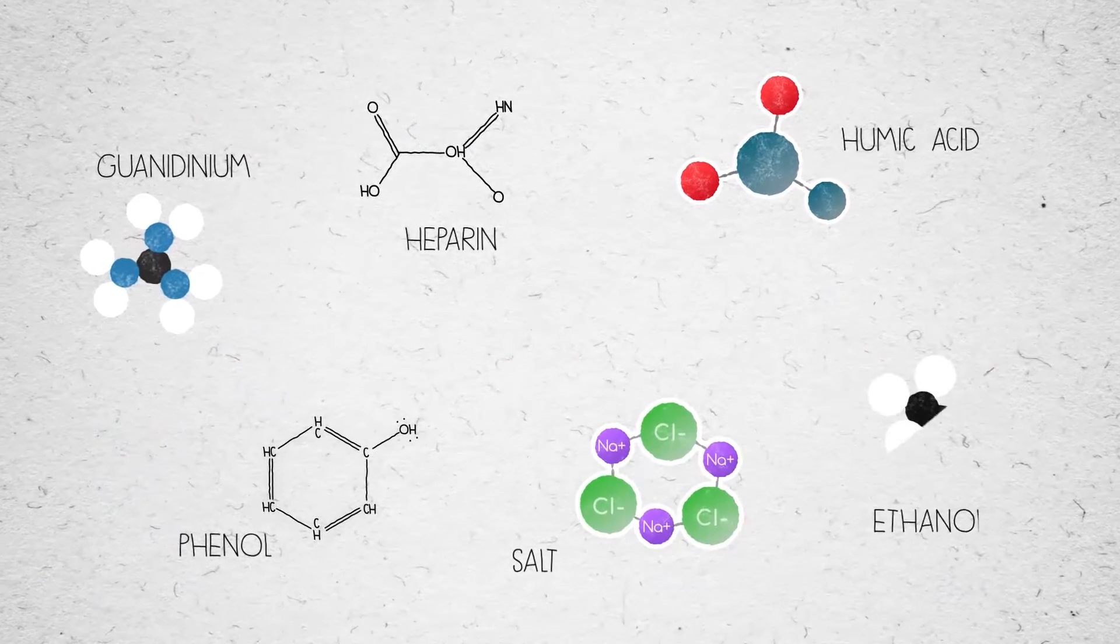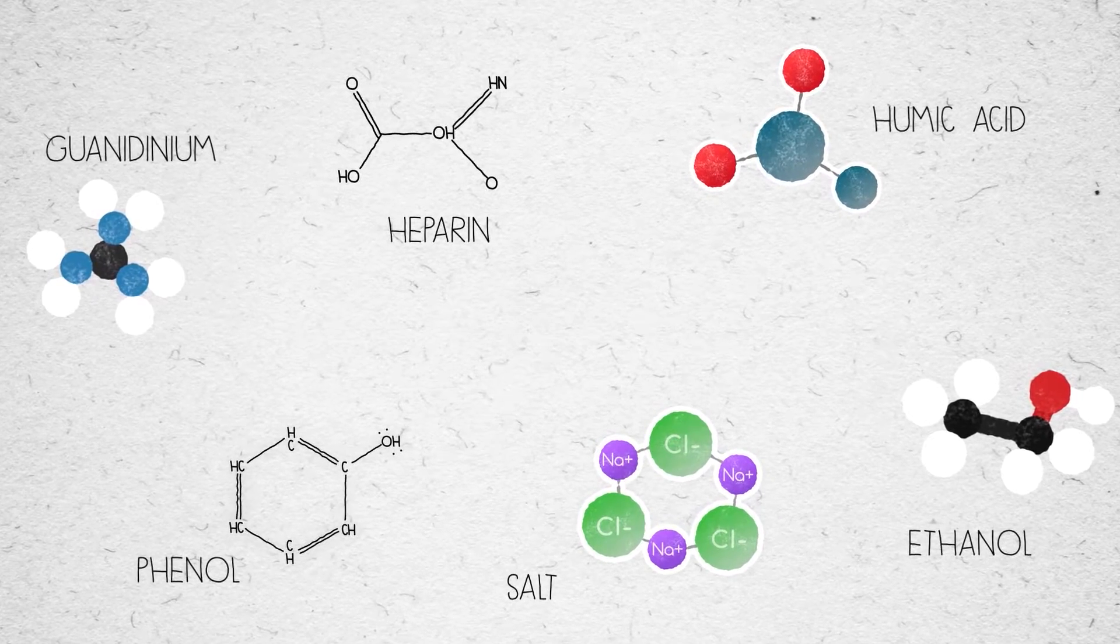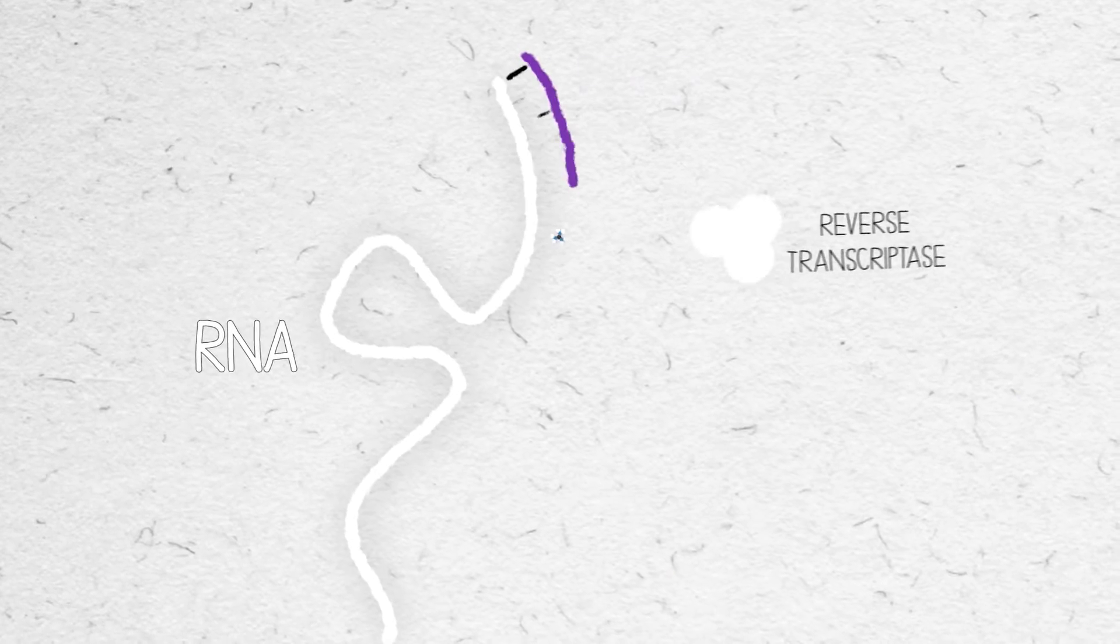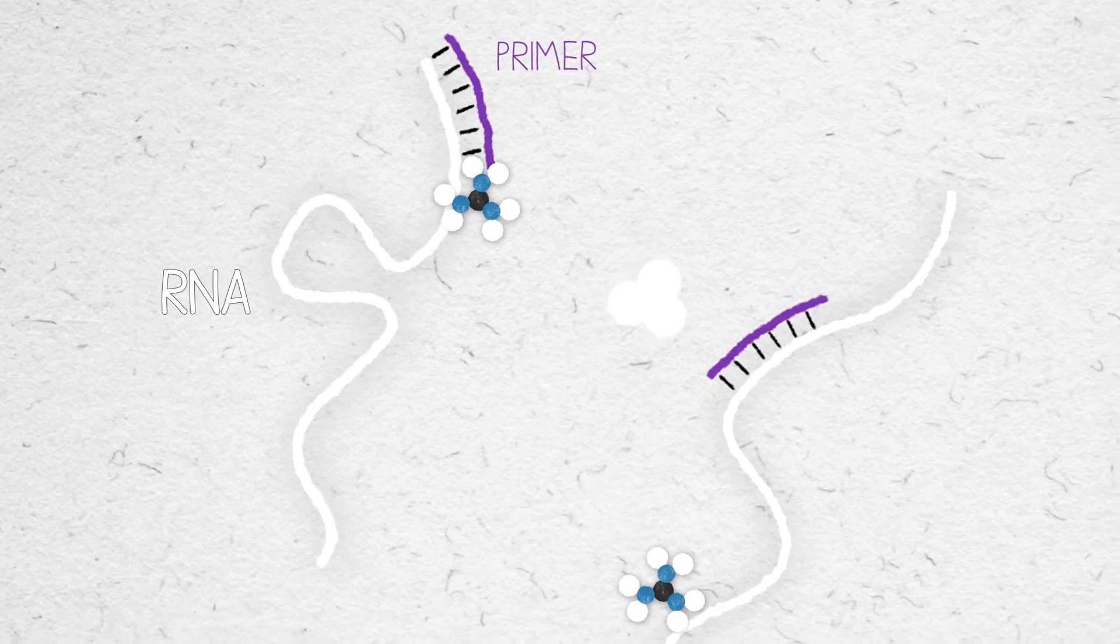These unwelcome guests will interfere in the RT reaction in different methods. Some inhibitors bind to the RNA via hydrogen bonds, also preventing the RT from attaching to the RNA.